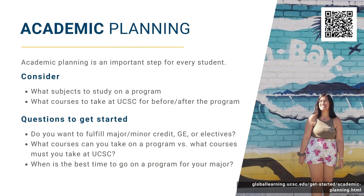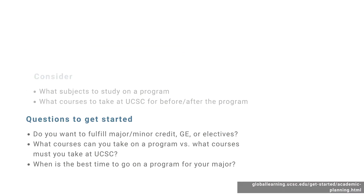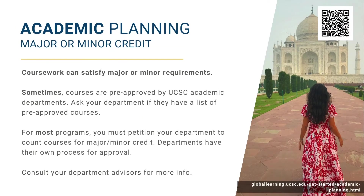Academic planning is an important and necessary step for every student. You must consider not only what subjects to take on a program, but also what must be taken at UCSC before and after your program in order to stay on track for graduation. It's important to ask yourself what kind of credit you want to fulfill, what courses you can take on a program versus what you cannot, and when is the best time to go for your major. Let's go over academic planning for major or minor credit.